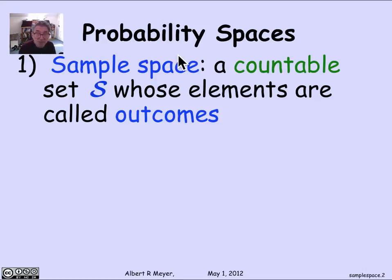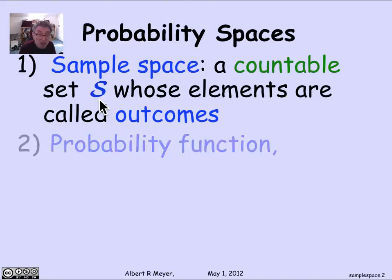The sample space is designed to model all the possible things that can happen as a result of your random experiment, all the possible outcomes. We require that there be a countable number. The examples we've seen so far have only had a finite number, but we will shortly see examples where we need an infinite number, but only a countable infinite number. That's part of the definition of a probability space, the set of outcomes.